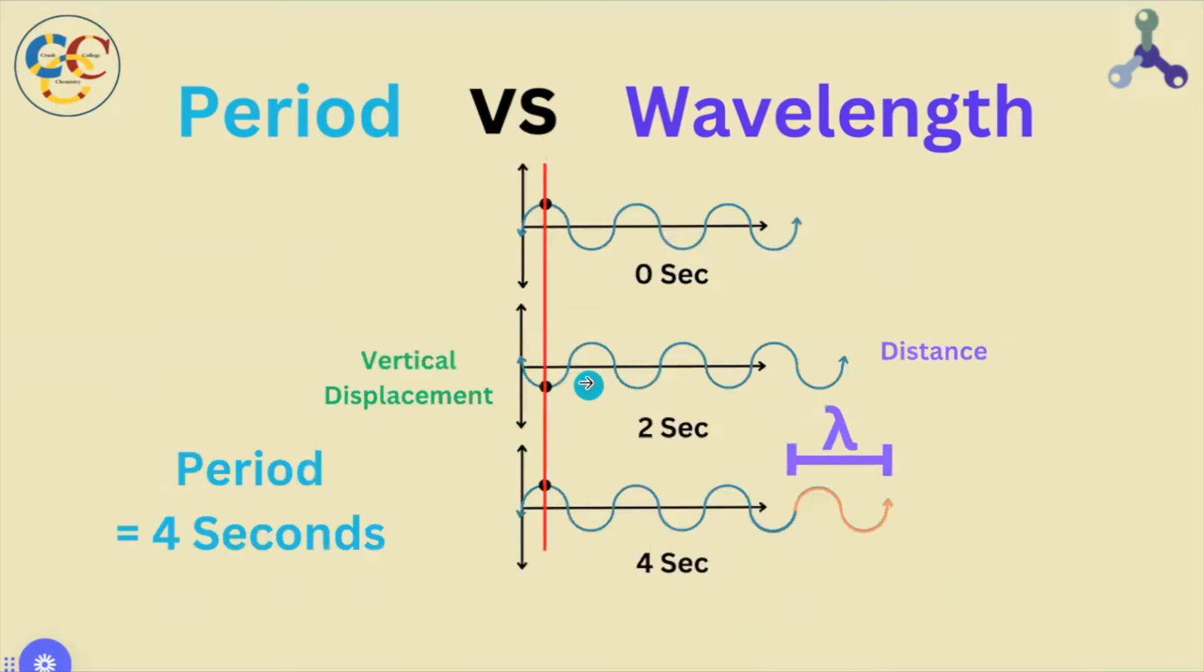Four seconds for a point of interest to start and stop in the same place and in the same direction. Also, in this exact amount of time, the wave has traveled forward a distance precisely equal to the wavelength.